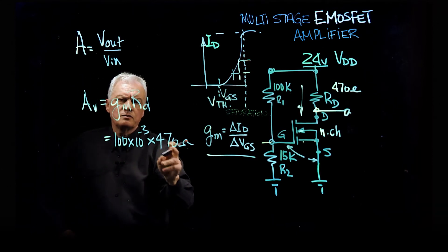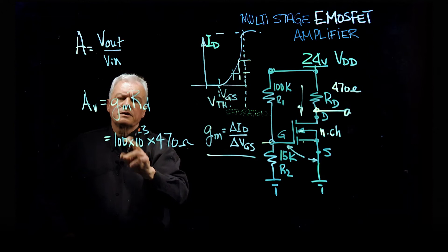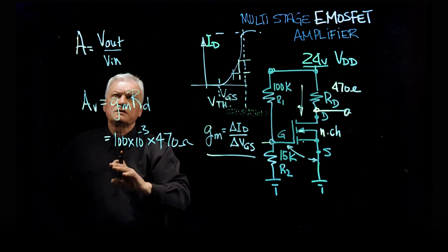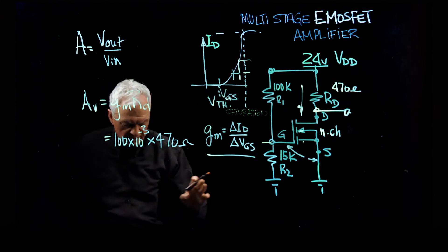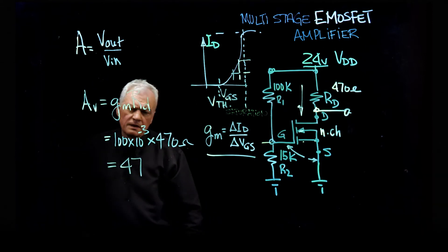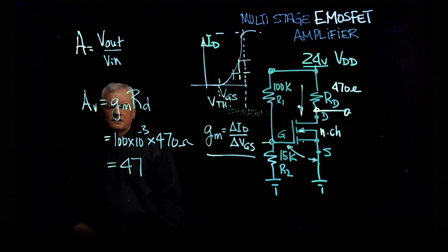So this is ohms times current. So resistance times current divided by voltage is equal to voltage in, voltage out, which means it's dimensionless. And this will give us a number like 47. So voltage gain is 47,